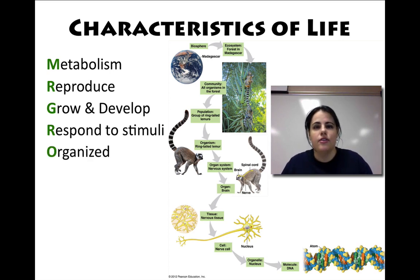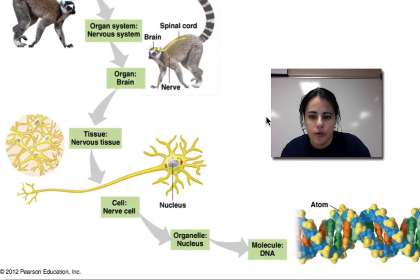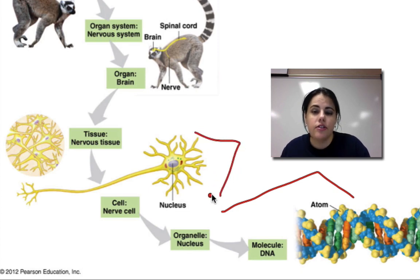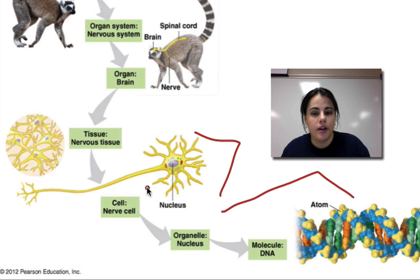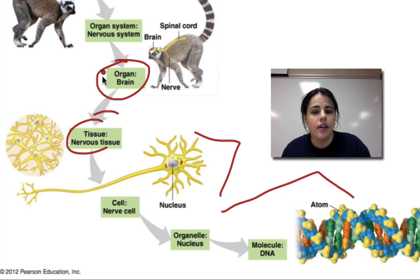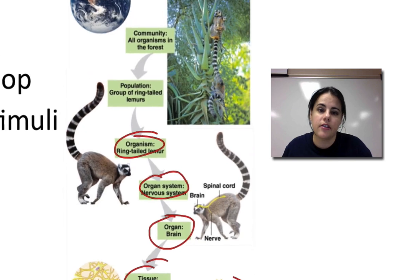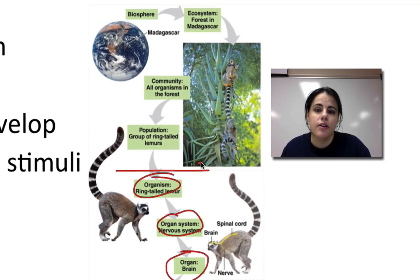All living things contain a certain organizational level. Down here we have the chemical level: subatomic particles, atoms, molecules, and organelles. Then we go into the cellular level — the organelles and parts that make up a cell, like the nucleus, and the different types of cells. Then we go into the tissue level when cells work together. When tissues work together it's called an organ. When organs work together it's an organ system. And when all your organ systems work together, you make an organism. These are the levels we're going to focus on in this class.